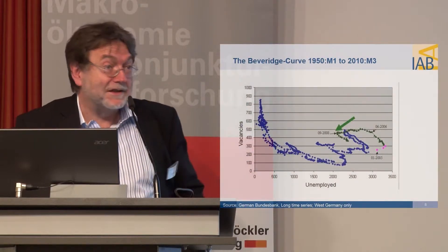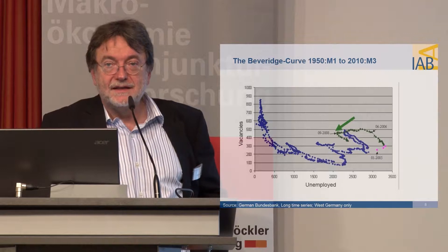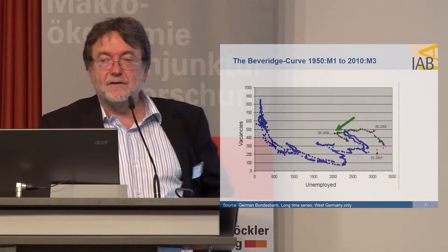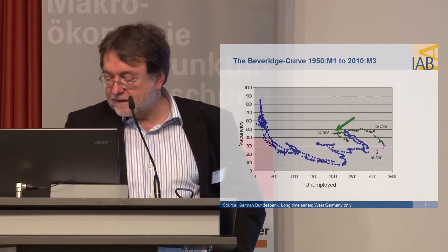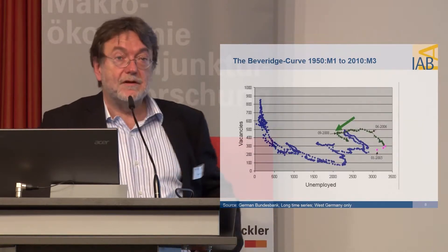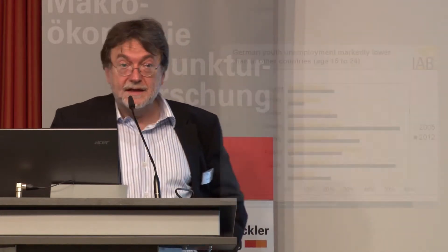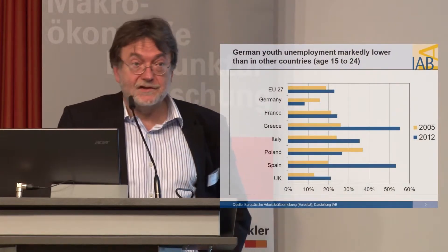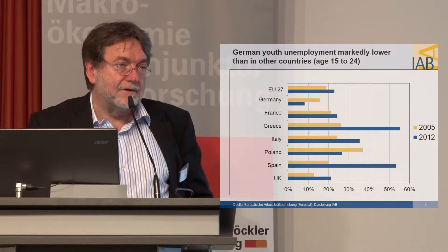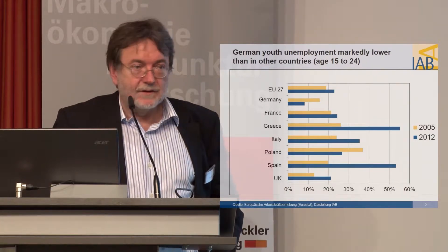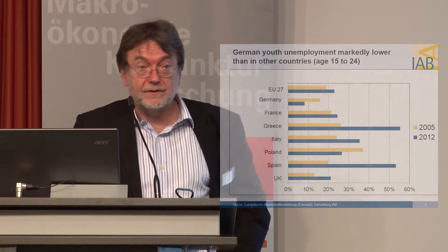The Beveridge curve was just mentioned — here is an example of the German Beveridge curve, with a very long time series behind it. What you see in the blue part of the curve is that it shifted outwards two times, meaning an increase in systemic or structural unemployment. For the first time, as the green arrow shows, it started to move in the right direction, indicating a reduction in structural unemployment. And lastly, Germany together with Poland is the only country where youth unemployment declined from 2005 to 2012.